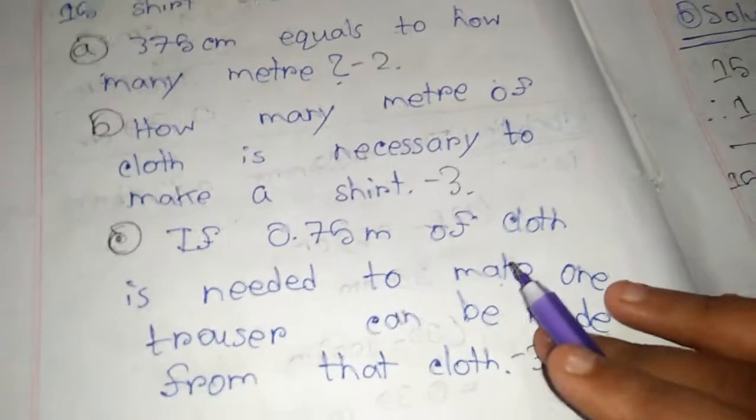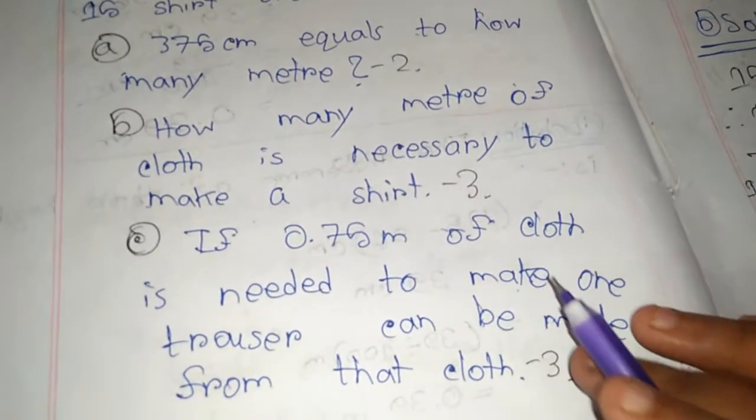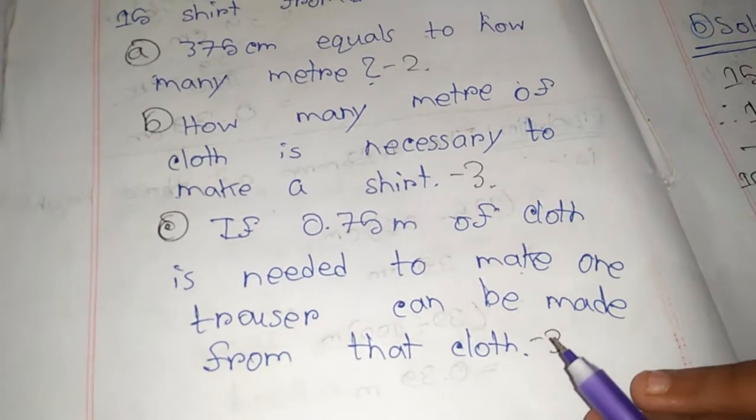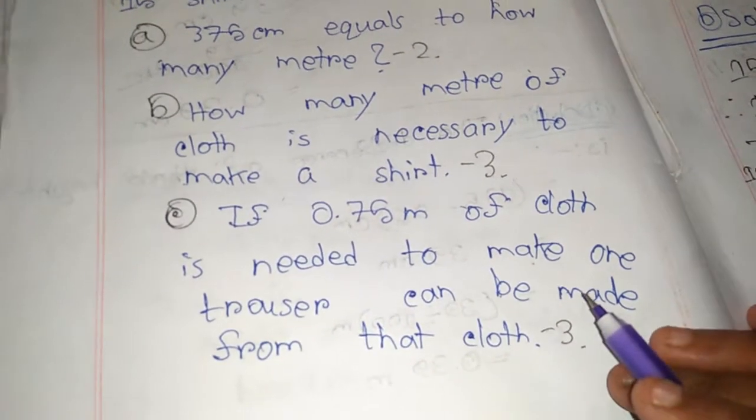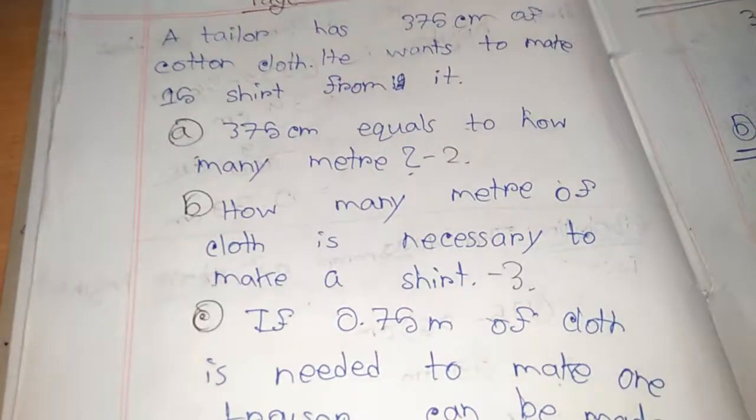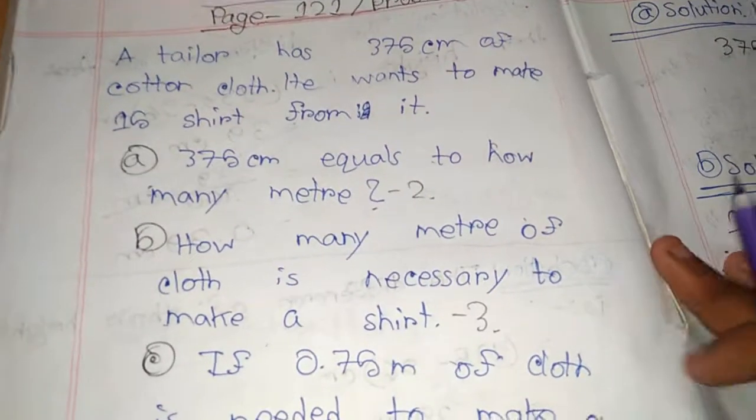Question C: If 0.75 meter of cloth is needed to make one trouser, how many trousers can be made from that cloth? Now I will show the solution to this problem.